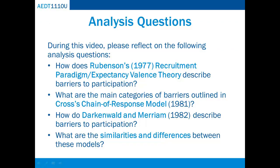During this video, please reflect on the following analysis questions: How does Rubenson's Recruitment Paradigm or Expectancy Valence Theory describe barriers to participation? What are the main categories of barriers outlined by Cross's Chain of Response Model? How did Darkenwald and Merriam describe barriers to participation? And what are the similarities and differences between these models?